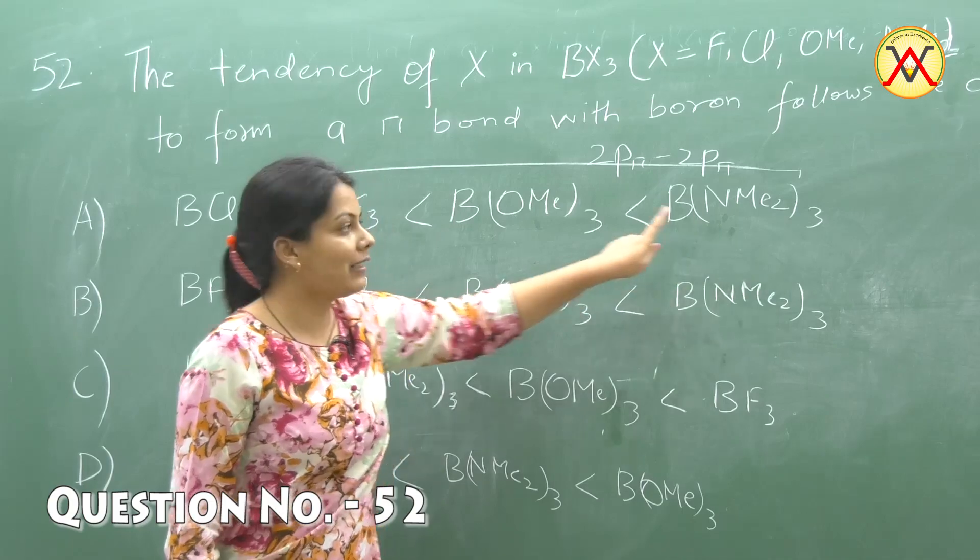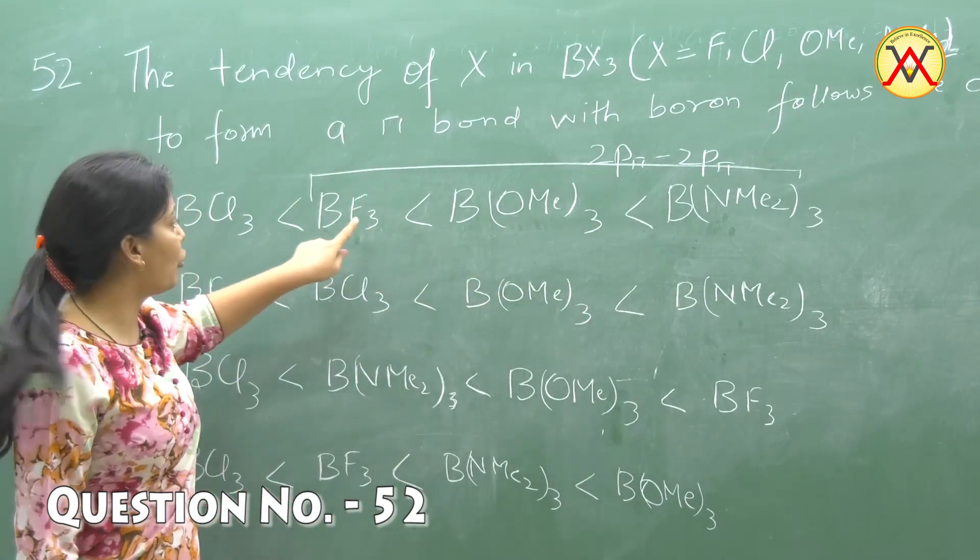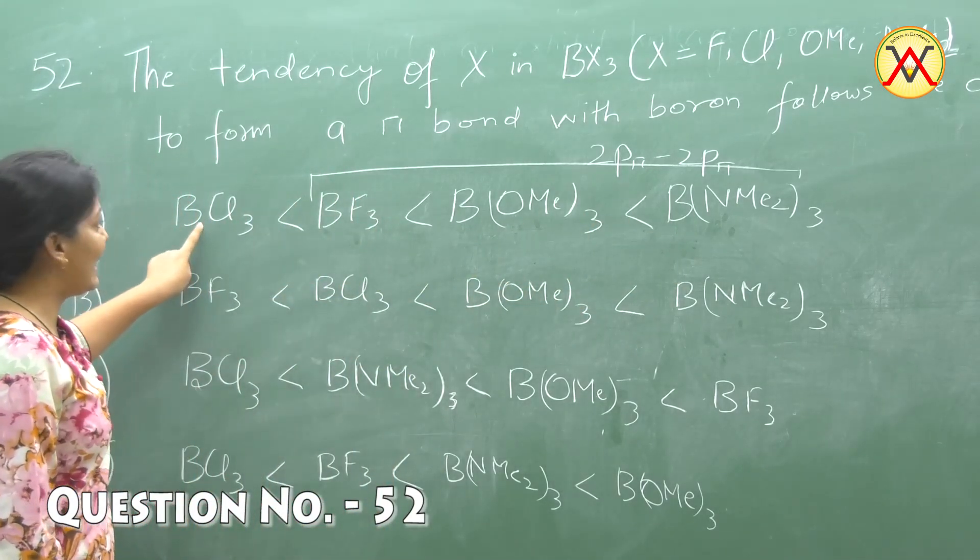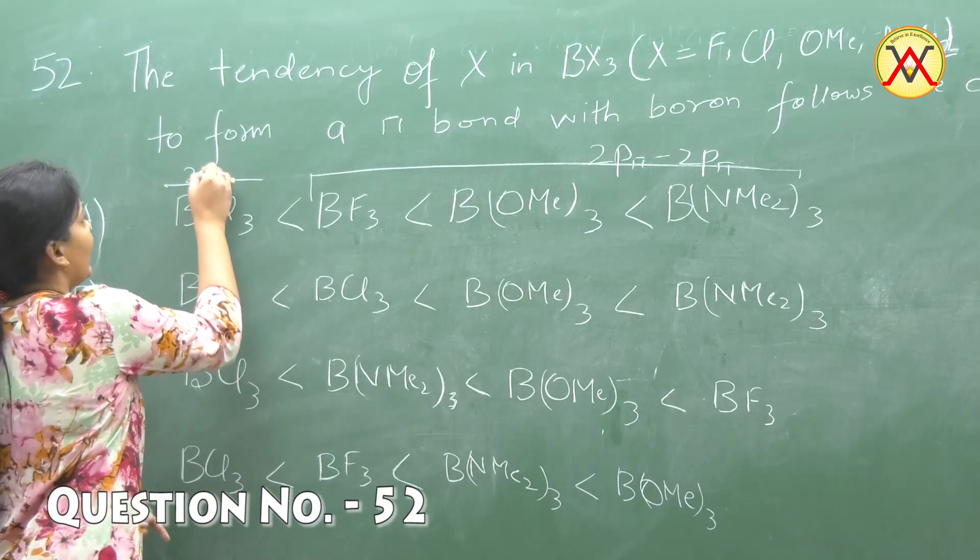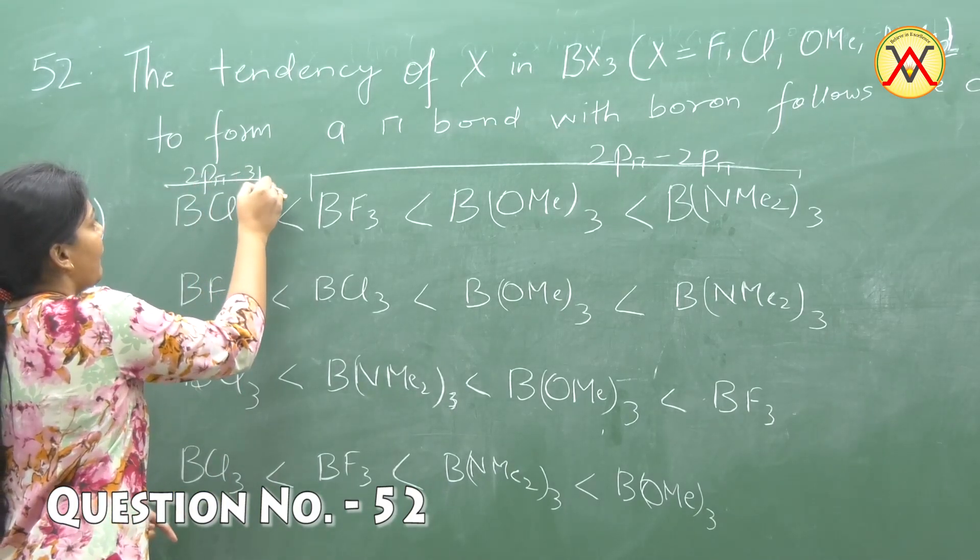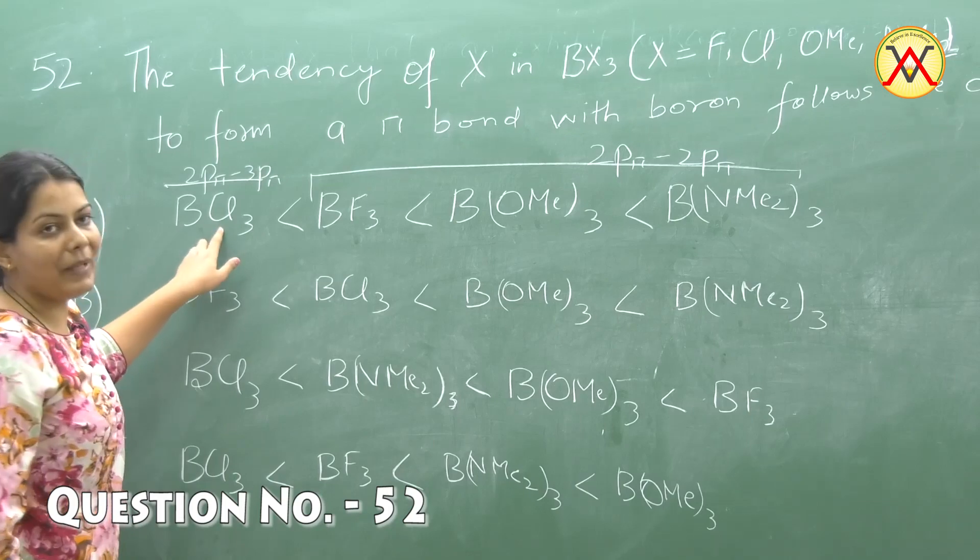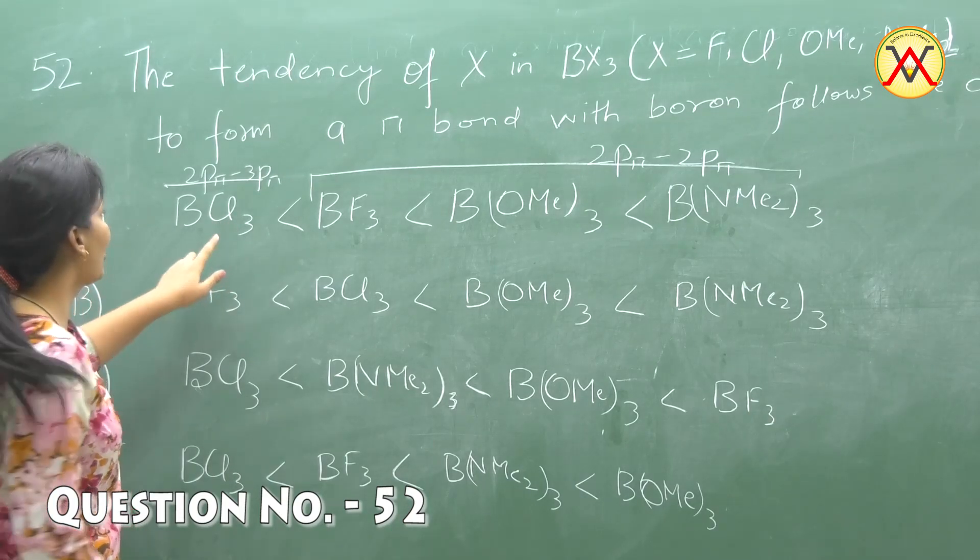Nitrogen is a better donor than oxygen which in turn is a better donor than fluorine. If we talk about BCl3, then this will be a 2p pi, 3p pi bond. It will be weakest and its tendency will also decrease for chlorine. Option is A.